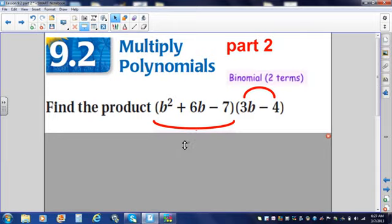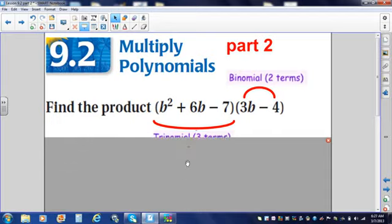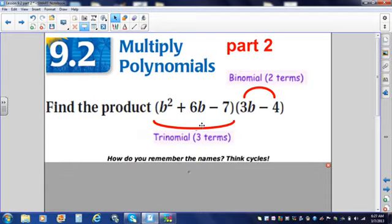If you take a look at our problem here on the screen, we have an expression. There is no equal sign. We're asked to find the product. That means we're going to multiply them together. But before we do that, let's break down what's going on. We have one, two, three terms. So this would be a trinomial. Over here, we have two terms. That would be a binomial.